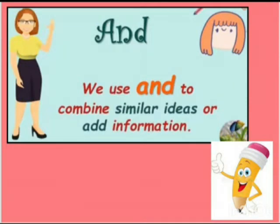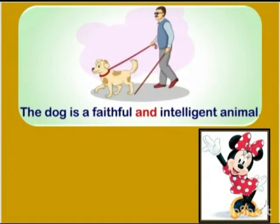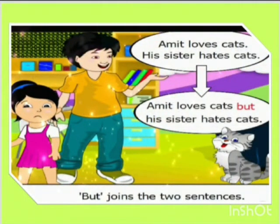We use 'and' to combine similar ideas or add information. Let's see how to use the conjunction 'and'. When we join two sentences using 'and', always remember that you have to leave out the first full stop. You might also have to leave out some words. Amit loves cats. His sister hates cats. We will write: Amit loves cats but his sister hates cats.